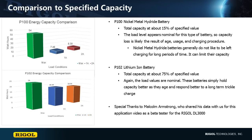On the other hand, the lithium ion batteries are still operating at about 75% of their listed capacity. These batteries simply hold capacity better and respond better to being charged consistently.